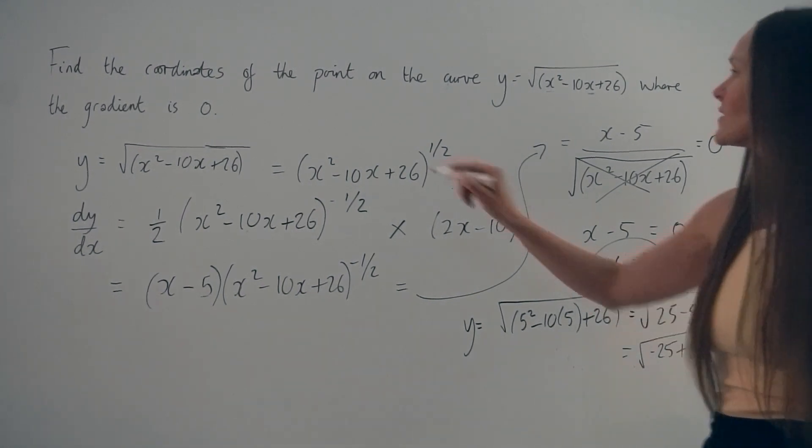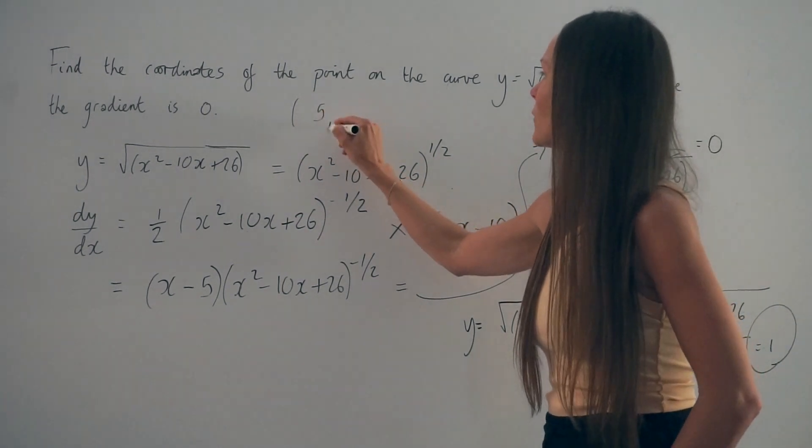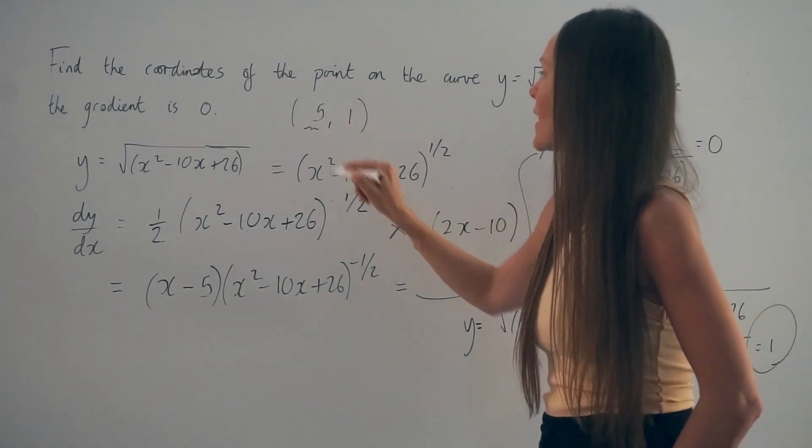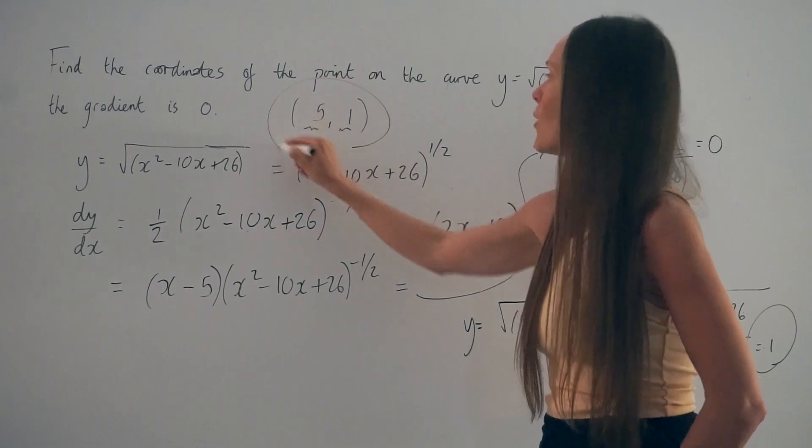So the coordinates are 5, 1. Remember, 5 was our value of x and 1 was our value of y.